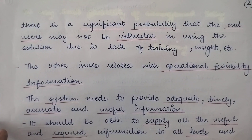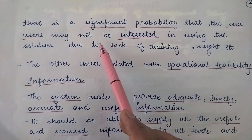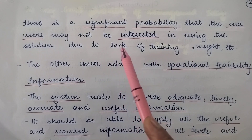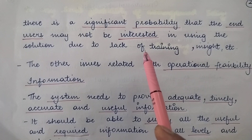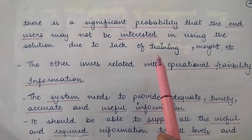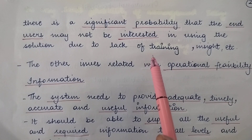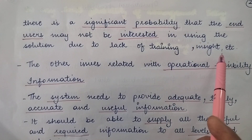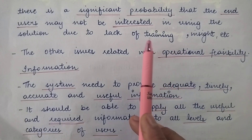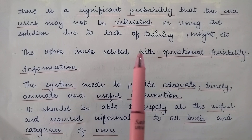But there is a significant probability that the end users who will be using the system on a daily basis may not be interested in using this solution. Why? Because they have a lack of training. The new technology being used in the information system — they are not well versed with that technology, they are not well trained in it. So due to difficulty in using it, they are not interested in using the information system. The other issues related with operational feasibility are information and more.